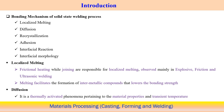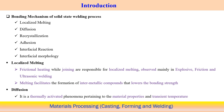Regarding localized melting: frictional heating during joining can cause very localized melting. This is observed in explosive, friction, and ultrasonic welding processes. However, if the bulk temperature is measured, it remains below the melting point. This localized melting can facilitate inter-metallic compound formation, which actually lowers the bonding strength — an important consideration in solid state joining.